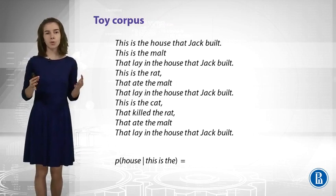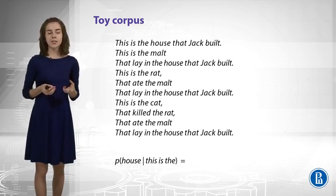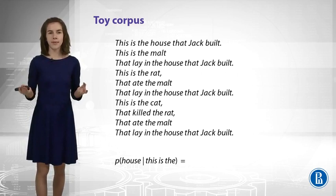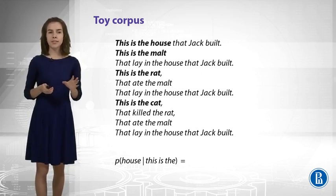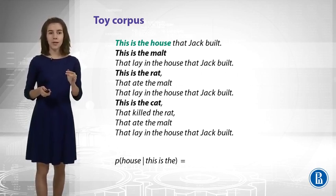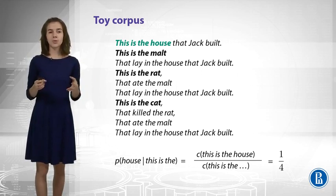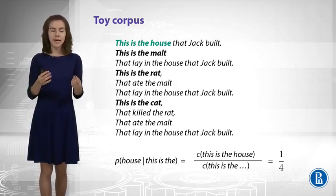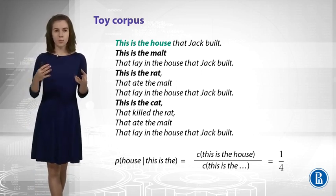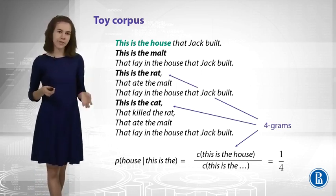So, let us get some toy corpus. This is a nice toy corpus about the house that Jack built. And let us try to use it to estimate the probability of 'house' given 'this is the.' So, there are four interesting fragments here, and only one of them is exactly what we need: 'this is the house.' It means that the probability will be one out of four. By c here, I denote the counts. So, this is the count of 'this is the house' or any other pieces of text. And these pieces of texts are n-grams. n-gram is a sequence of n words. So, we can speak about four grams here. We can also speak about unigrams, bigrams, trigrams, etc.